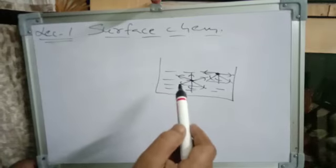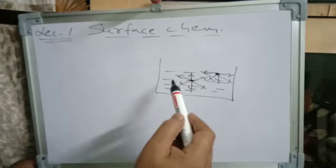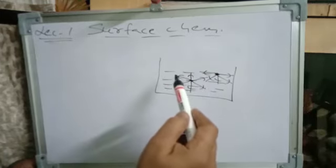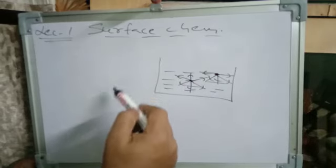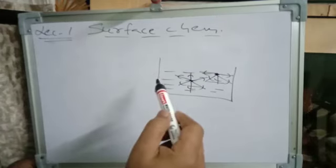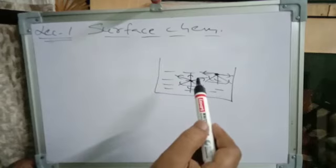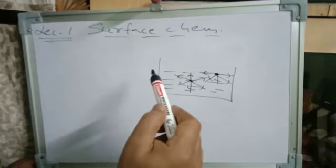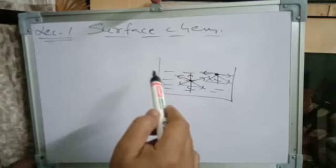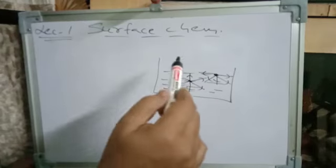Water has hydrogen bonding, so its forces are strong and its surface is strong. If we mix something like KCl into water, the forces become stronger and the surface tension increases. Similarly, if we add alcohol, the surface becomes weak. This concept is used in cleansing action in soap. We read this in Class 11.